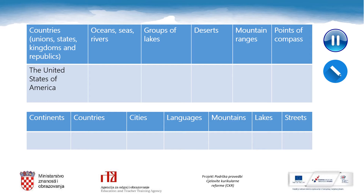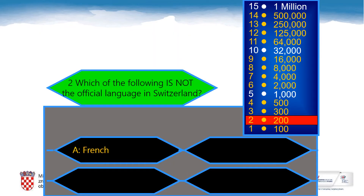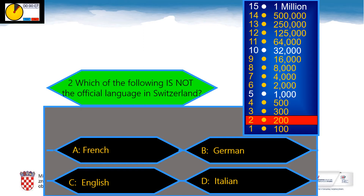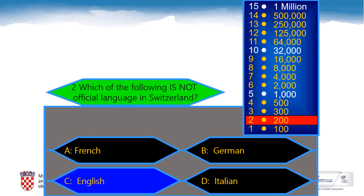Here is the second question for 200 points. Which of the following is not the official language in Switzerland? A: French, B: German, C: English, D: Italian. You have 8 seconds. English is the correct answer. Don't forget to sum up your score.